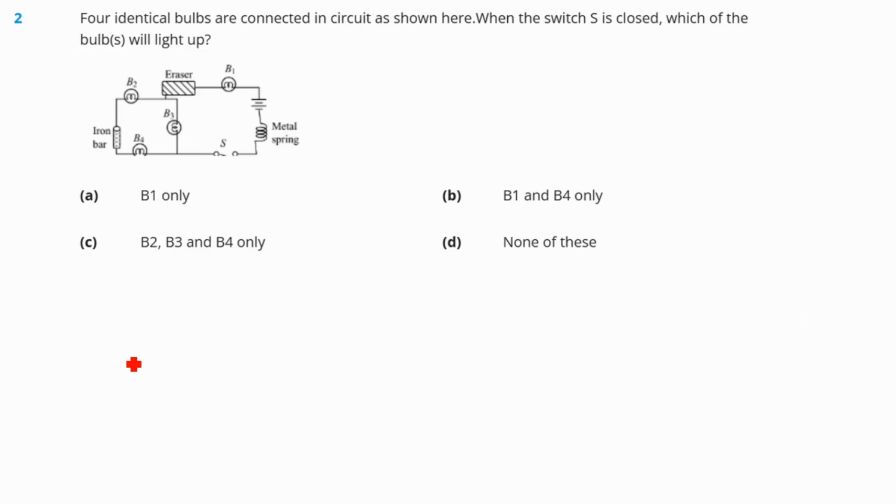Question number 2. Four identical bulbs are connected in circuit as shown here. When the switch S is closed, which of the bulbs will light up? Here we can see that this is the battery, this is the switch, this is a metal spring, this is bulb 1, and an iron bar is connected. When the switch is closed, none of the bulb will light up. Why? Because it is being hampered. The circuit is not closed. If there is an eraser, it is hampering the flow of the charge. So here none of the bulbs will glow. Our correct answer is option D.